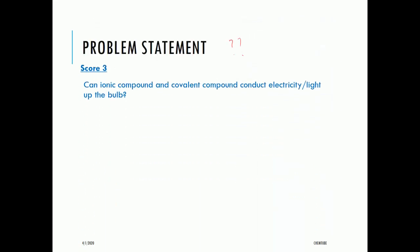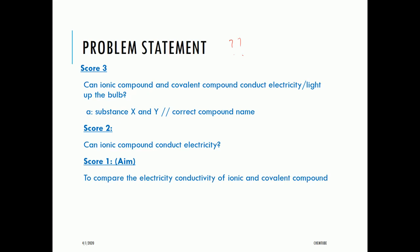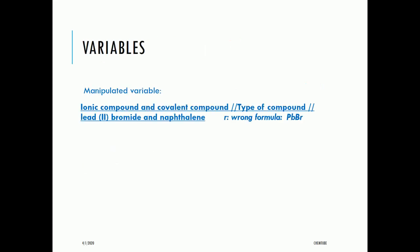Score 3: both ionic and covalent compounds can conduct electricity or light up a bulb — we accept substance X and Y or correct compound names. Score 2: ionic compound can conduct electricity without mentioning the covalent compound. Score 1: to compare the electrical conductivity of ionic and covalent compounds.